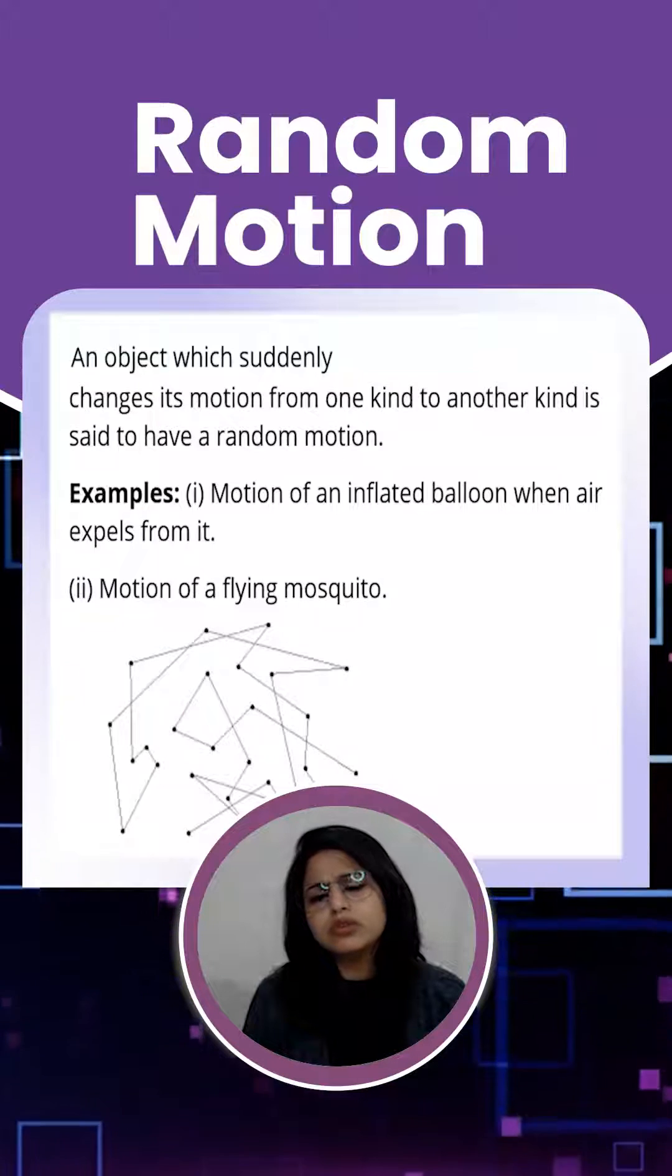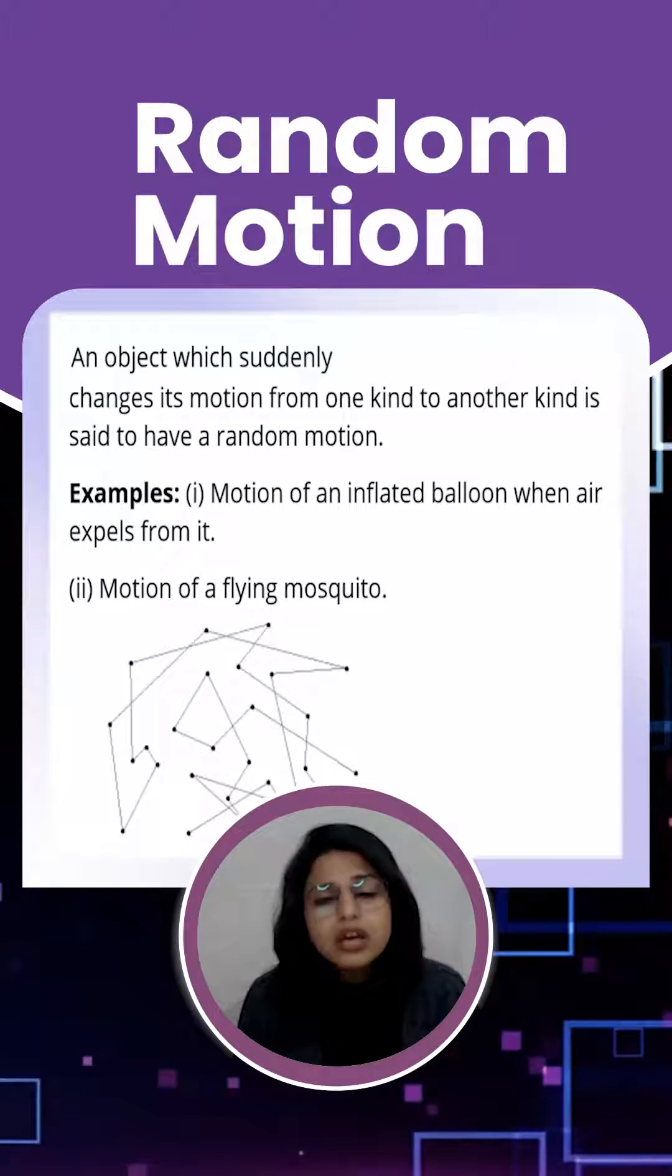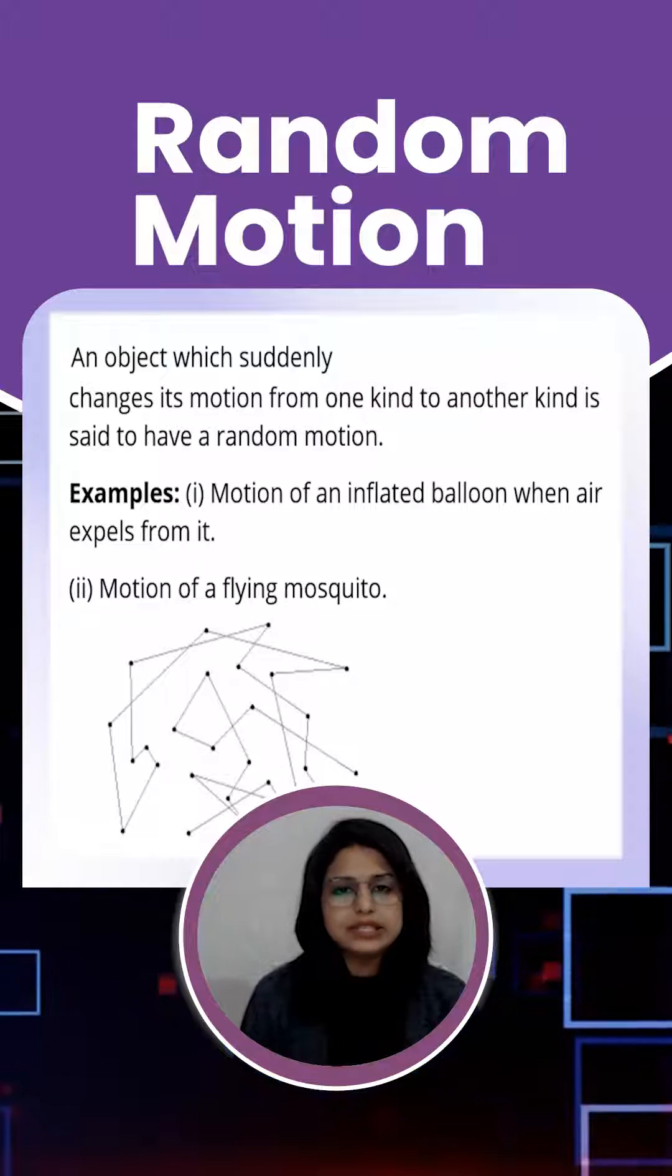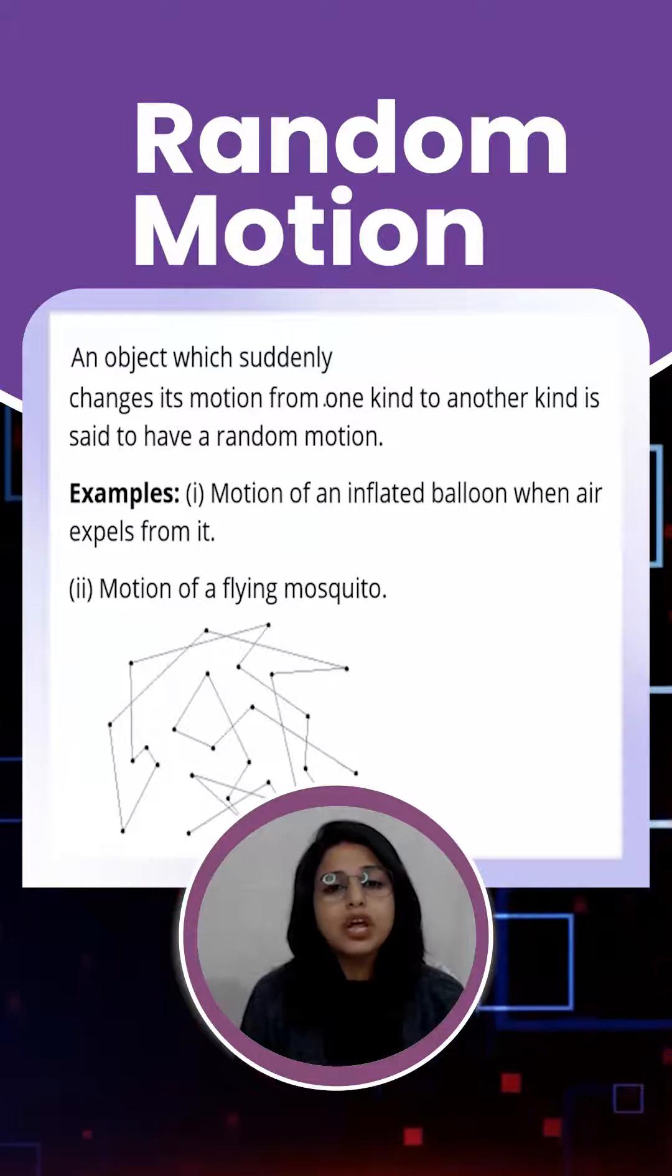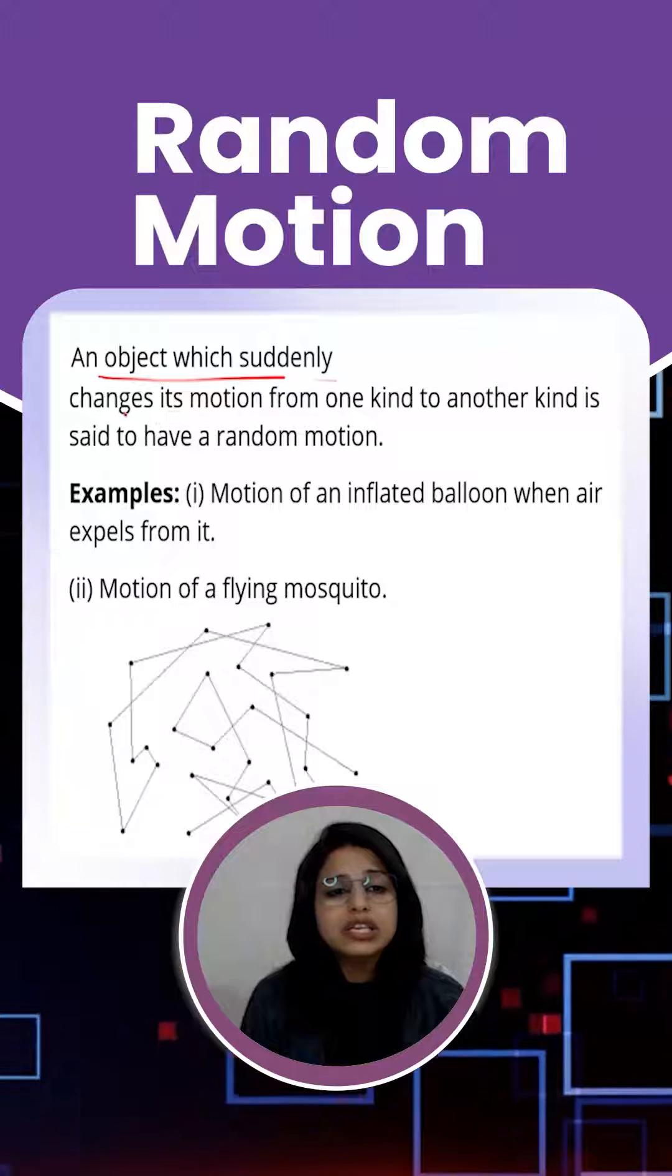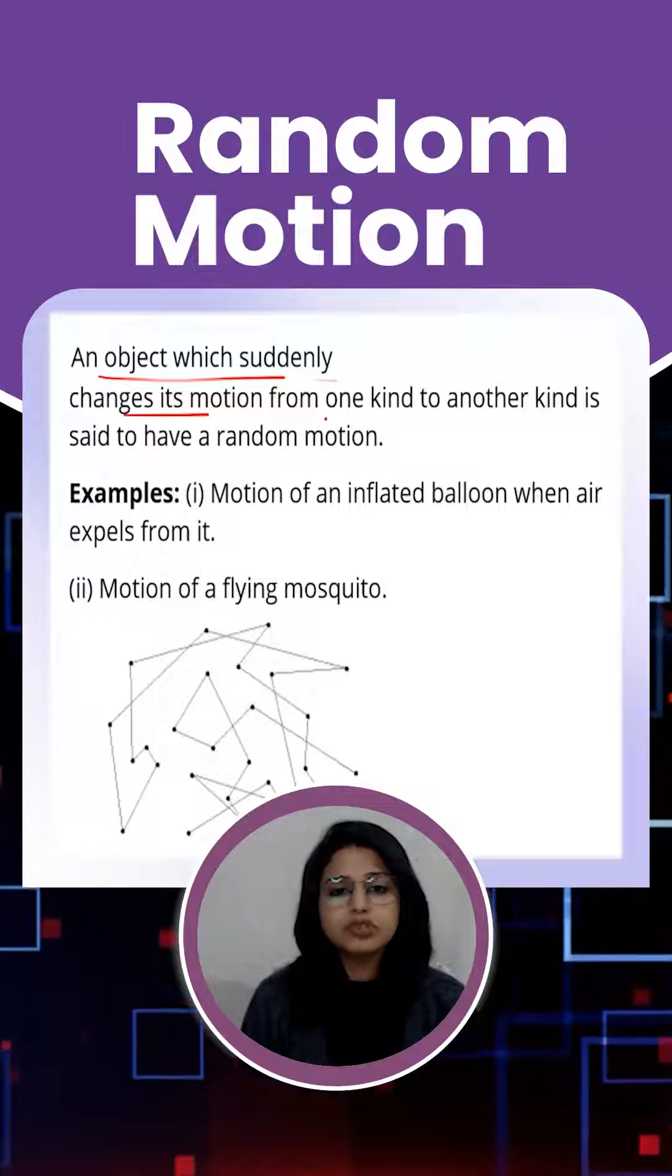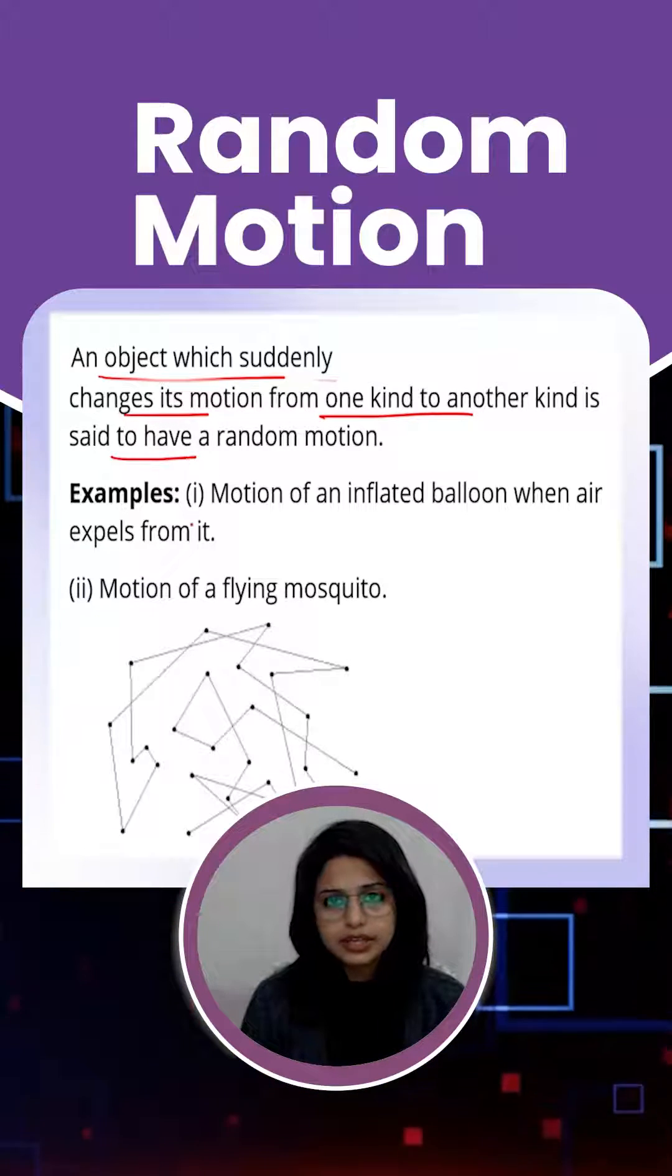So what is happening? We are generally seeing this kind of motion as the most common motion, where an object suddenly changes its position or its motion from one kind to another kind. That is called random motion.